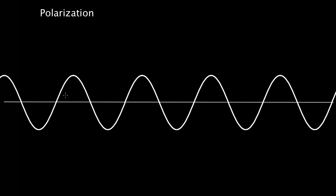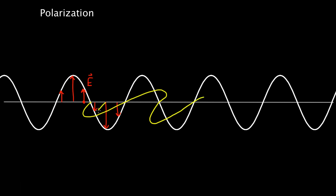Let's talk about polarization of light. We know what light waves are — they're electromagnetic waves made out of electric fields. There also have to be magnetic fields that are changing, and those are perpendicular. This gets really messy if I try to draw both the electric and magnetic fields at the same time, so we're going to leave the magnetic fields out. It's often good enough to just know the direction of the electric field, and we focus on the electric field.